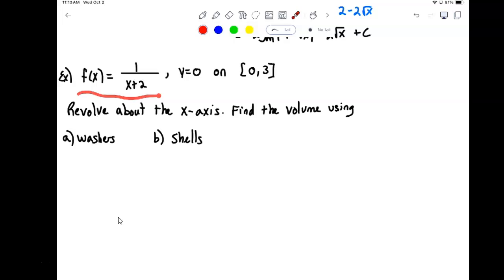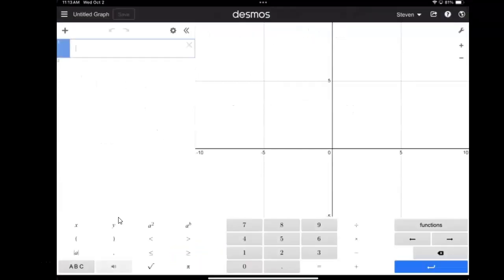So in this case, we have the function f of x equals 1 over x plus 2. We're looking at that function bounded by the x-axis, y equals 0, on the interval from 0 to 3. We're going to take that region and revolve it about the x-axis, and we want to find the volume using our two methods, washers and shells. So first thing, let's take a look at the graph.